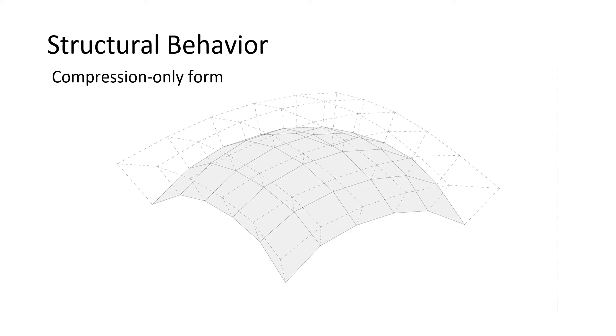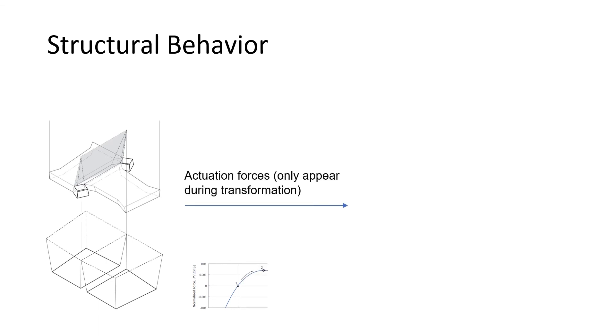We know funicular shells can carry gravity loads with compression stress only. Our system can take advantage of such geometry if we reach curved stage through contraction. At the initial stage, the panels are laid flat and detached, connected by connectors. During the reconfiguration process, the actuation forces need to pass a certain threshold, which we call a critical state.